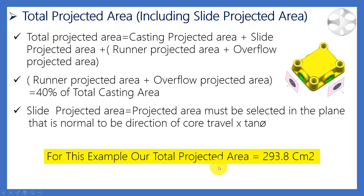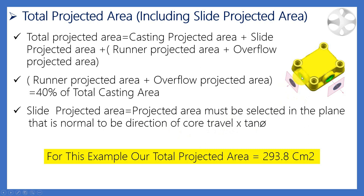Then we select our machine according to the calculated machine tonnage, get the center distance between tie bars from the machine manual, and then we need to get the gravity center point of our casting shot. For example, the total projected area equals casting projected area plus slide projected area plus runner projected area plus overflow projected area — overflow is 40% of our casting projected area. The slide projected area must be selected in the plane normal to the direction of core travel, then multiplied by tan(θ), where θ is the wedge angle used for our slide.